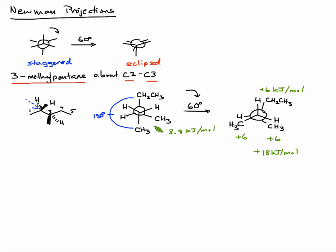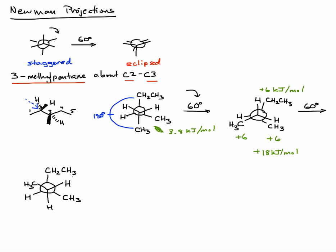Continuing the analysis, we do another 60-degree rotation. Drawing the front carbon: hydrogen, methyl group up, hydrogen. The rear carbon is represented as a circle with its substituents unchanged. Estimating the energy of this conformation, the main interaction is a gauche interaction, which we approximate as a methyl-methyl gauche: +3.8 kJ/mol.